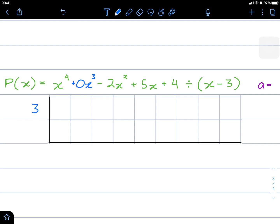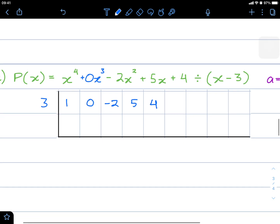So the coefficients of this are 1, 0, negative 2, 5, and 4. We ignore the first one and we begin our multiplication. 3 times 1 is 3. Adding, it's going to be 3. 3 times 3 is 9. Adding, it's going to be 7.